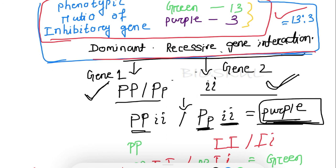The phenotypic ratio for dominant recessive gene interaction, or inhibitory gene interaction, is 13:3. Hope this video will help you. If you like this video, please share it with your friends and don't forget to subscribe to the channel.